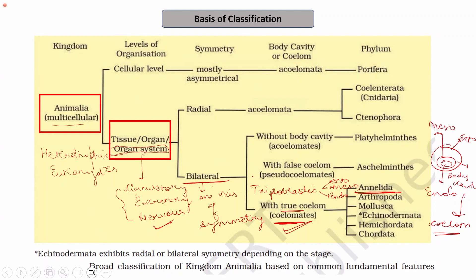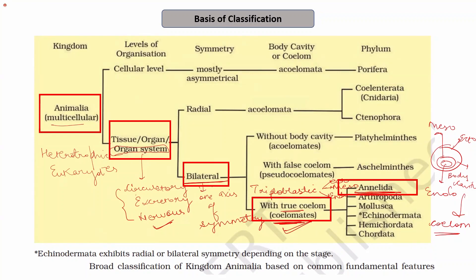To summarize, organisms of phylum Annelida are multicellular animals with organ system level of organization. They are bilaterally symmetrical, they have a true coelom, and they are coelomates. These are the basic characteristics. Now we will learn about the specific characters of the organisms that belong to phylum Annelida.